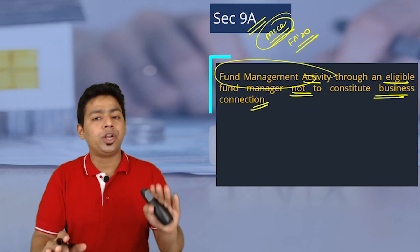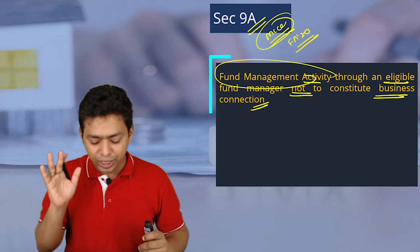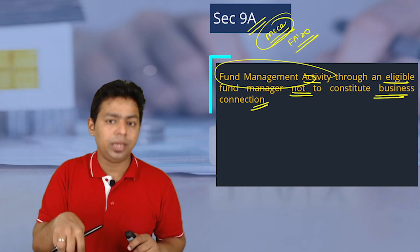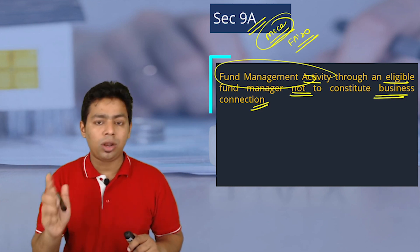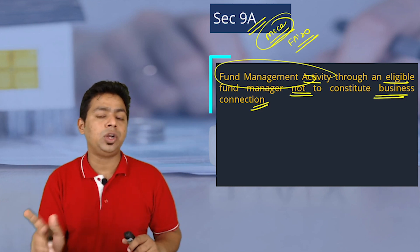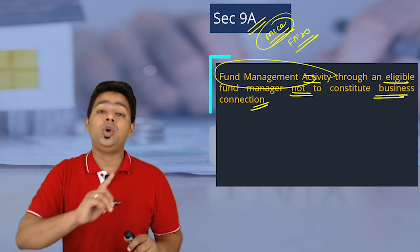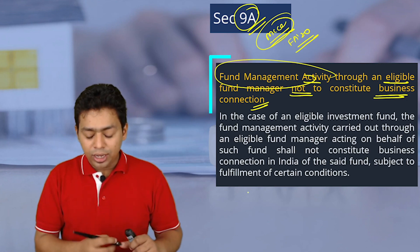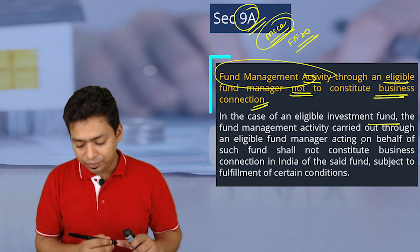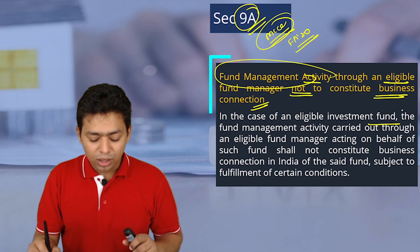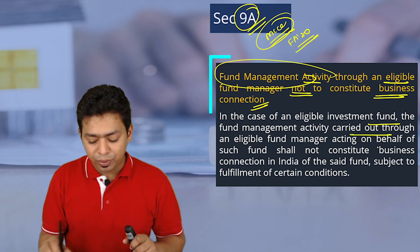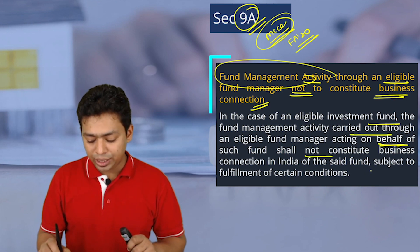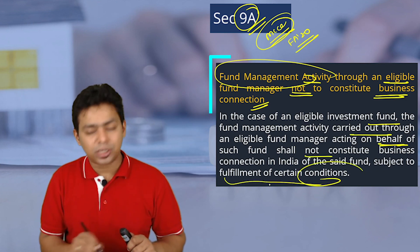We are not going to consider that a mutual fund is having a business connection in India merely because they are having a manager in India. He is not an agent. Do not consider him as a dependent agent. Don't bring the business connection concept when Section 9A is applicable. In the case of an eligible investment fund, the fund management activity carried out through an eligible fund manager acting on behalf of such fund shall not constitute a business connection in India, subject to fulfillment of certain conditions.